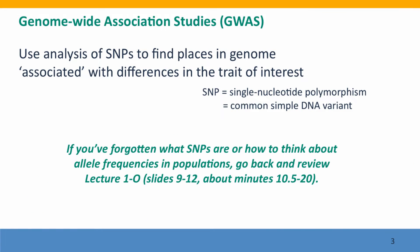A genome-wide association study uses analysis of SNPs to find places in the genome that are associated with, linked to, or in some way causing differences in the phenotypic trait that we're interested in. A SNP is short for a single nucleotide polymorphism. If you've forgotten what SNPs are or how to think about allele frequencies in a population, you might want to go back and review Lecture 1-0, which will remind you of this, because it's going to be quite important a couple of slides from now.